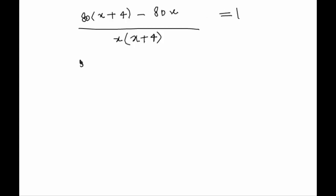This gives us 80 x plus 320 minus 80 x upon x square plus 4 x is equal to 1. 80 x and 80 x in the numerator cancels off, we get 320 upon x square plus 4 x is equal to 1, thus we get x square plus 4 x minus 320.